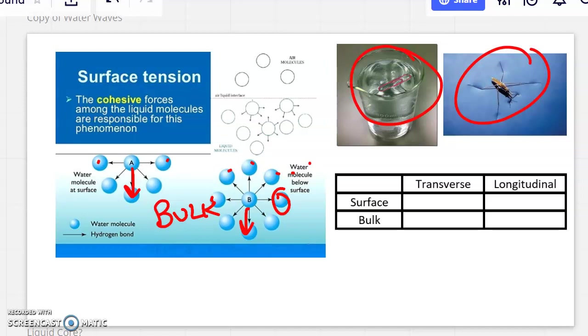All that is to say, transverse waves, they do travel very, very well across the surface of a fluid. But down in the bulk, transverse waves don't do well. Longitudinal waves, on the other hand, they degrade in any case, because longitudinal waves rely on collisions and high pressure for propagation of the wave.